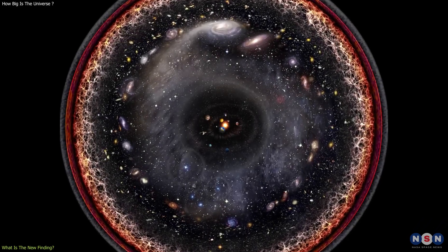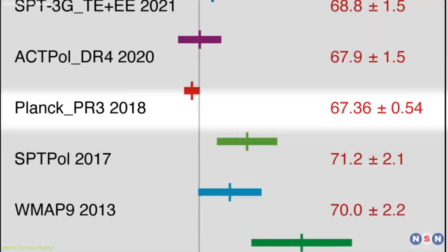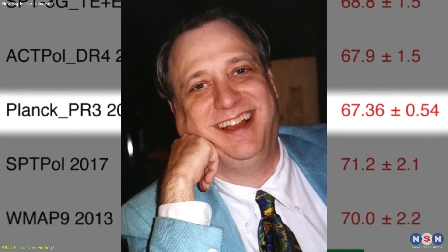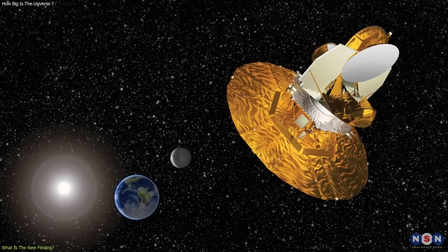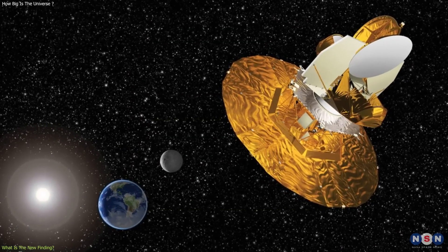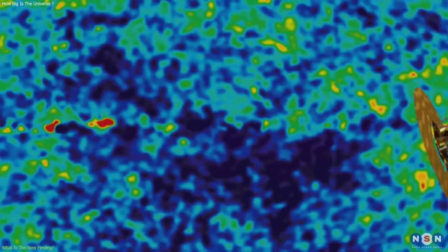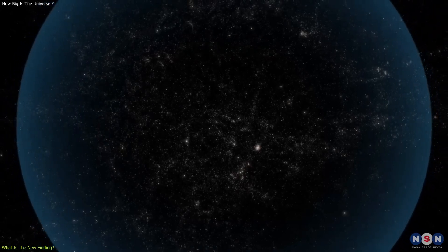They compared their result with the previous estimate by J. Richard Gott and his team in 2003, which was based on the data from the Wilkinson Microwave Anisotropy Probe, or WMAP, which was another space observatory that measured the CMB before Planck.